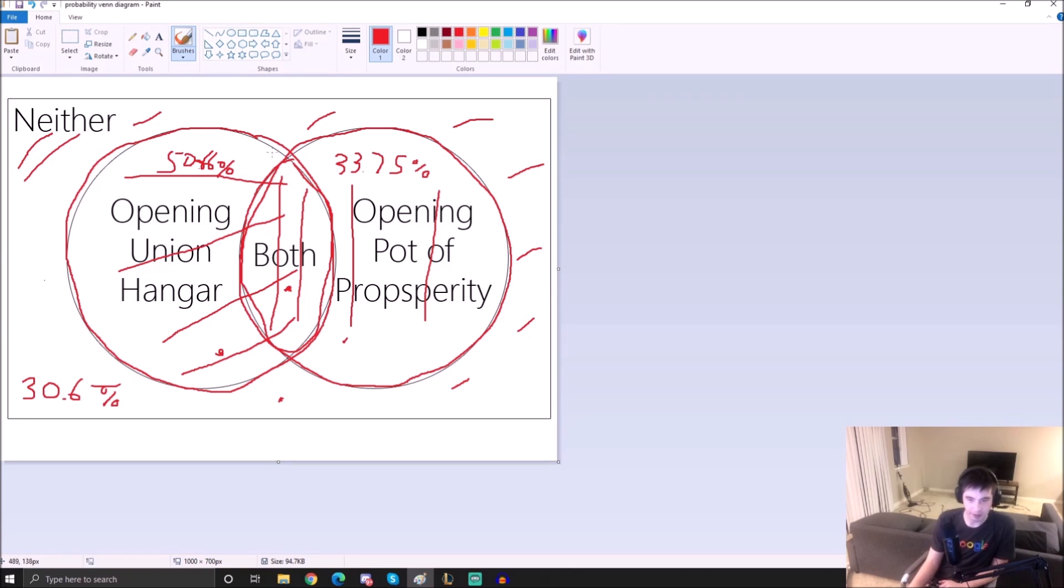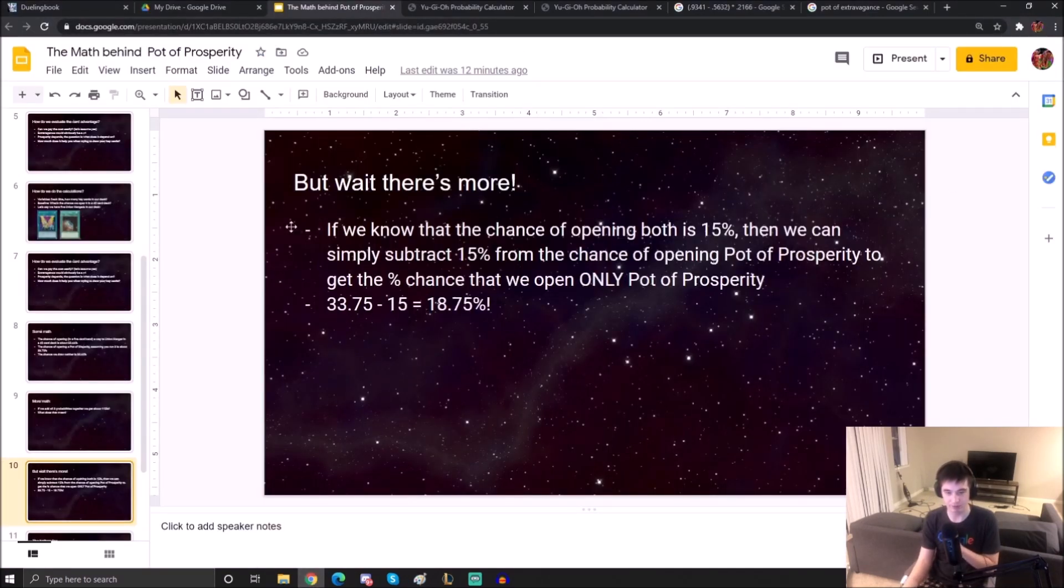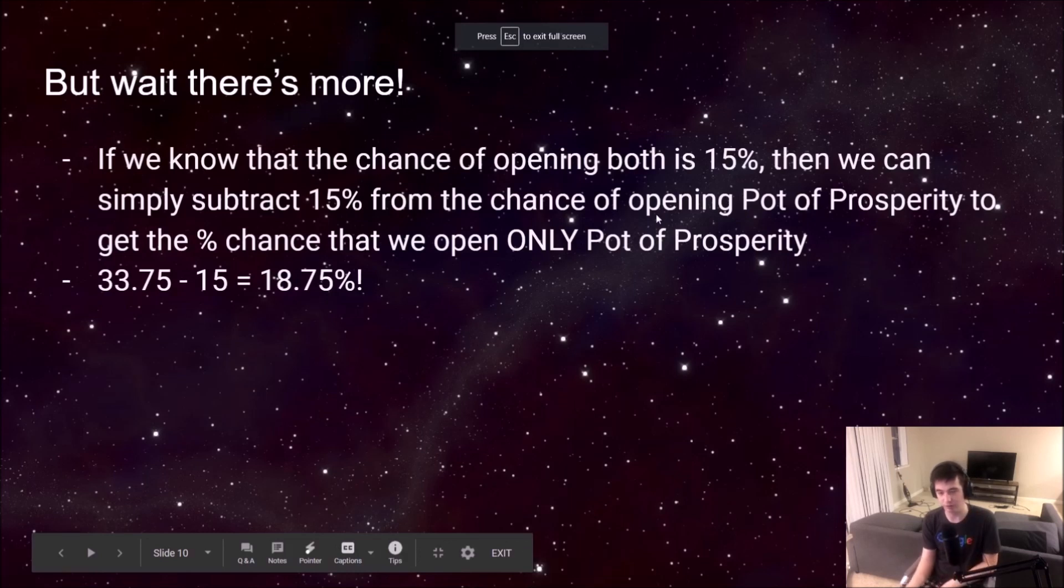So if we want to find the chance that we only open Pot of Prosperity, we find that it's 18.75%. But why is this so important? That's so important because we don't actually care about the hands where we draw Union Hangar. We already have the Union Hangar, so we'd rather probably just draw 2 cards. However, Pot of Prosperity helps us when we draw it but there is no Union Hangar. That's the key here. When there is no Union Hangar and we draw Pot of Prosperity, then Pot of Prosperity has a chance to find us the hanger. That's why we're so obsessed with this probability of only opening Pot of Prosperity and not Union Hangar.